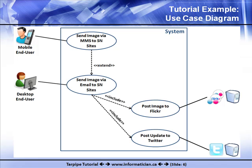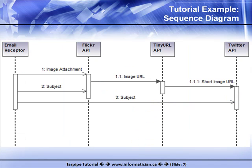The use case for our tutorial example is simple: we're assuming an end user is using their mobile phone or computer to send an email or MMS message containing a picture, with a subject line that can be used as a caption for that picture, and we want to post that picture to Flickr and post an update to Twitter. We take the attachment from that email and post it on Flickr, use the subject line as a caption on Flickr, and the subject line also becomes our Twitter update. Once the picture is posted on Flickr, a URL is generated, we shorten it using Tarpipe's TinyURL module, and include it in our Twitter update.